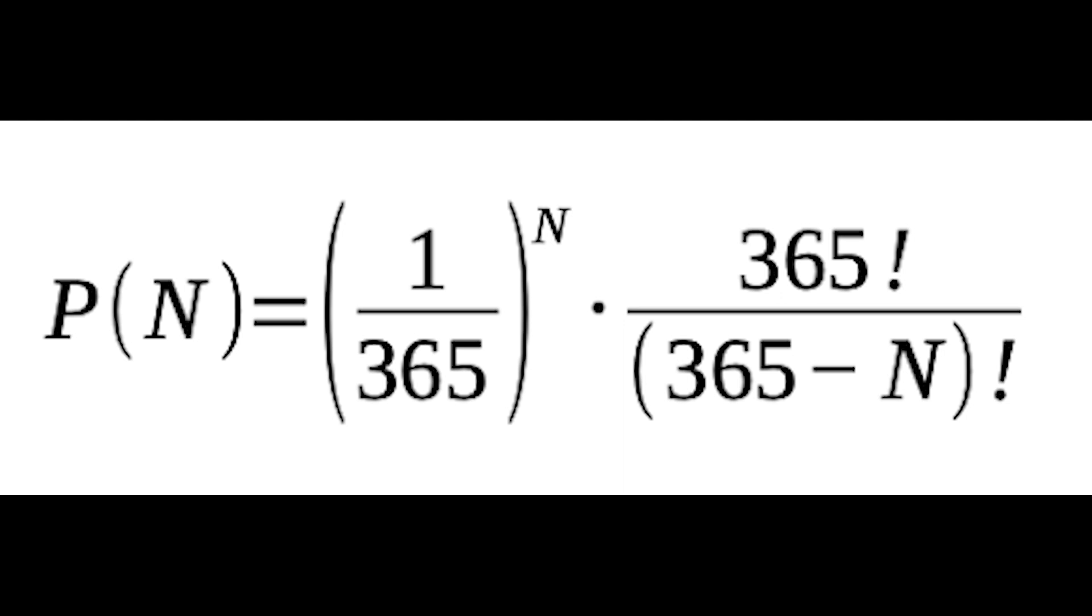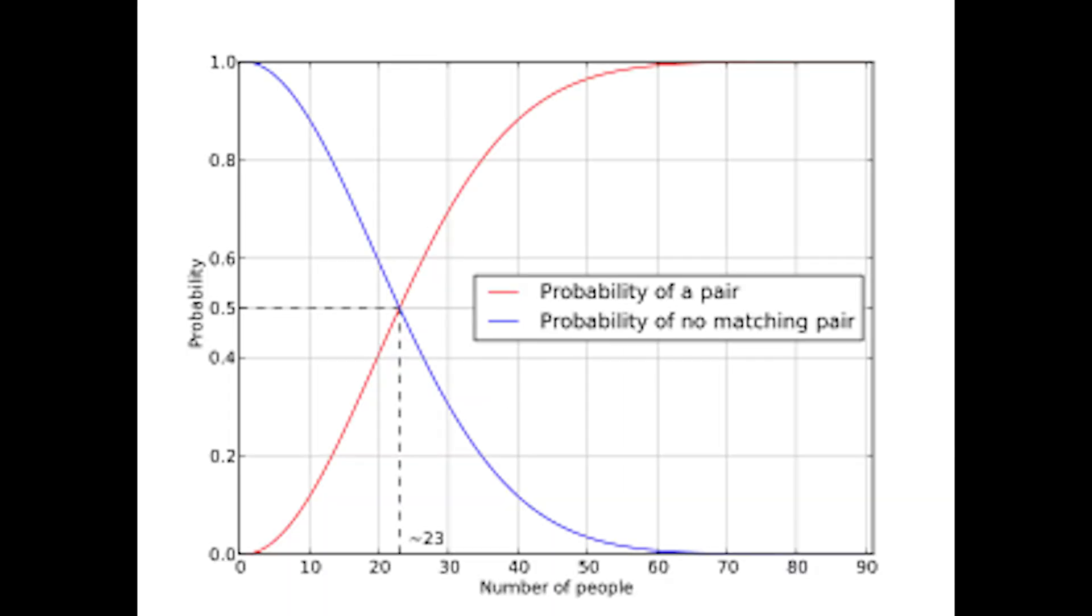you have 1 in 365 chance of sharing a birthday with each of the 22 other people in the room, for a total of 22 over 365 chances. If you fail to match, you leave the room, and another person will have 21 out of 365 chance of sharing their birthday with the remaining people.